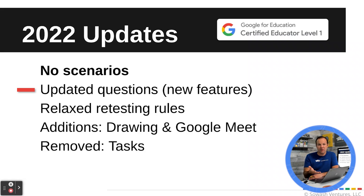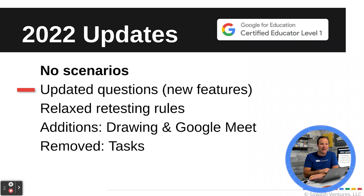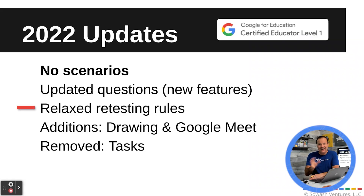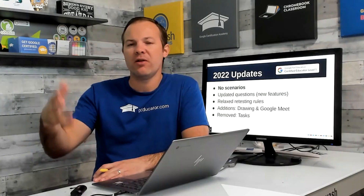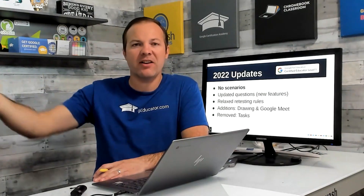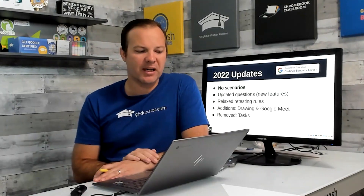Things like new features for Google Meet, Google Classroom, and Smart Chips in Google Docs are included, where in the past Google had a hard time adding new updates to the Level 1 exam. Google has also relaxed the retesting rules a little bit. If you don't pass the first time, you can take the test again three days later, and again seven days after that. You can actually take the test up to four times in one calendar year with a small waiting period in between.